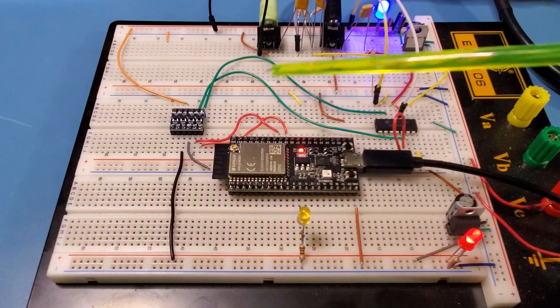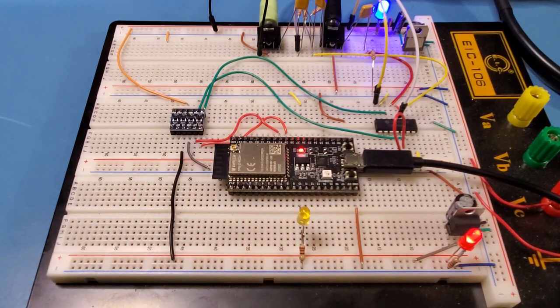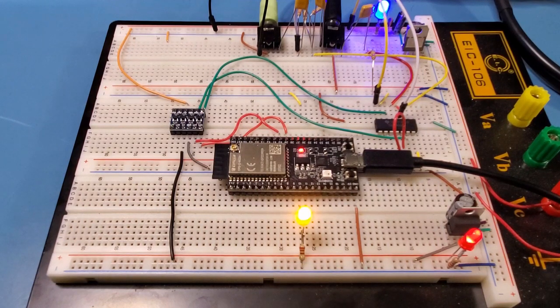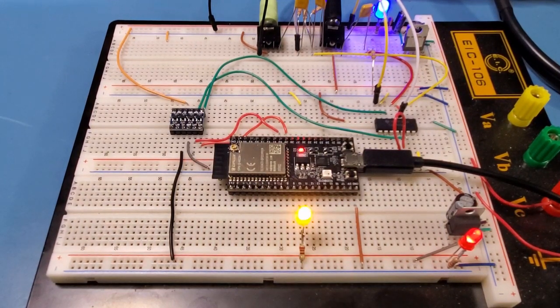Now obviously this is single pole double throw. I need double pole double throw for the audio switching that I mentioned before. But that should be a straightforward extension. Anyway, more to come on the transmitter and so on in the following videos.